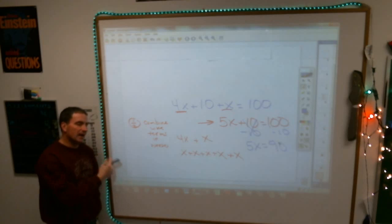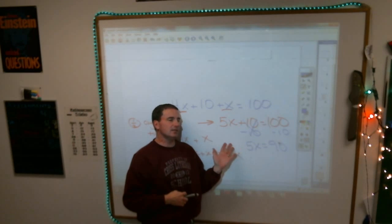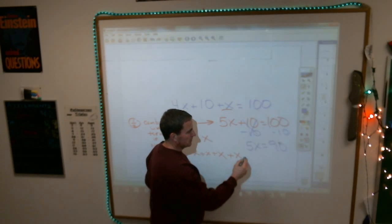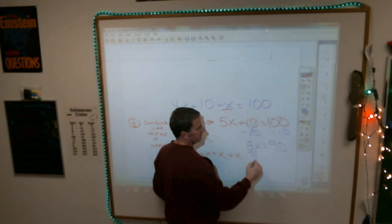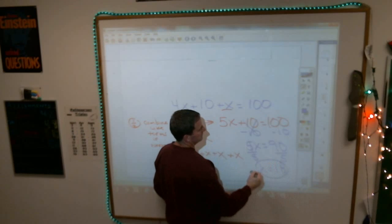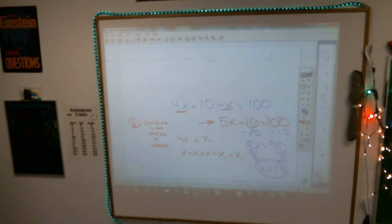You're left with 5x equaling 90. And then as you will find, as you do more of these equations, the last thing you're going to do 98% of the time is, whatever number's in front of that x, you're going to divide by it. So now I divide by 5, I divide by 5. You get 18. If you have to do that on paper, then by all means.